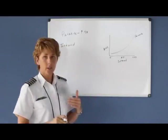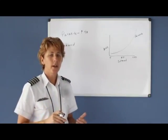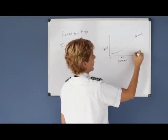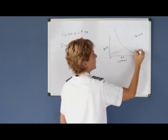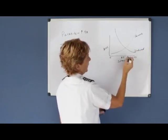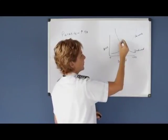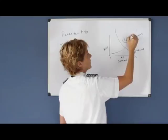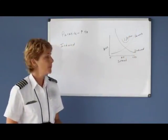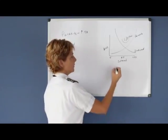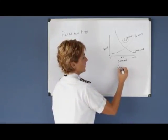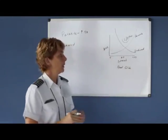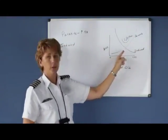Induced drag is actually backwards — it becomes worse and worse the slower we go. Wherever these two drag curves meet, that's called your LD max, which is your lift-to-drag maximum ratio. It's basically your best glide speed — the point where you have the least amount of parasite drag and the least amount of induced drag.